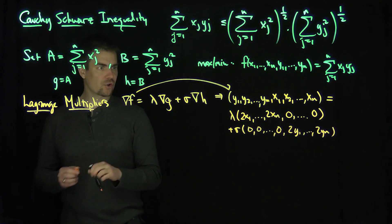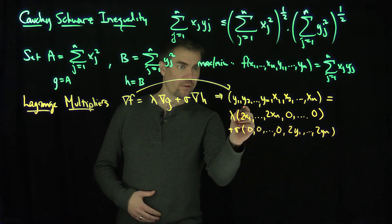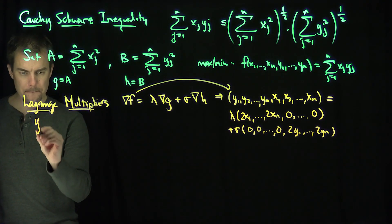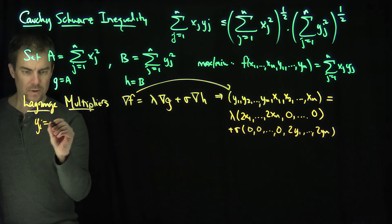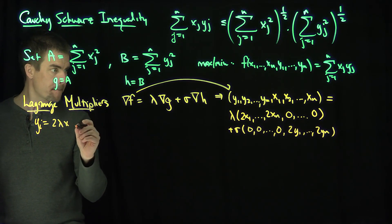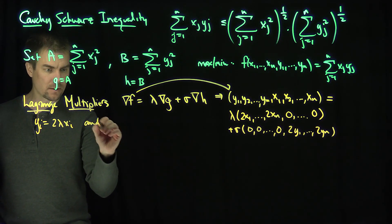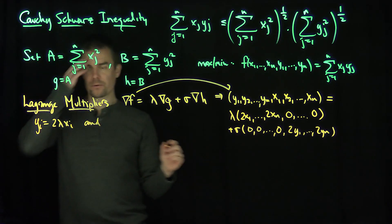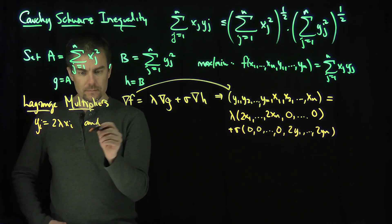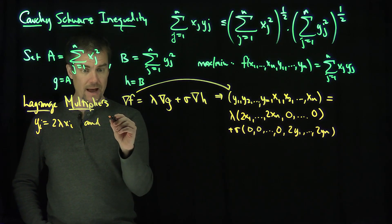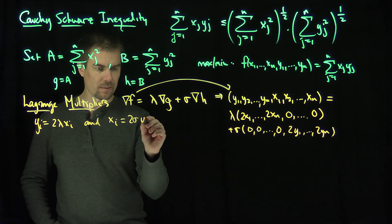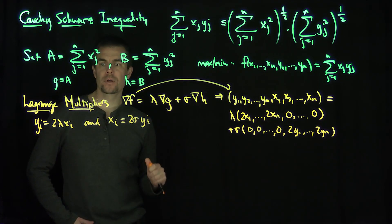From this expression, we can conclude that yi is equal to 2 lambda xi, and we can conclude that xi is equal to 2 sigma yi.